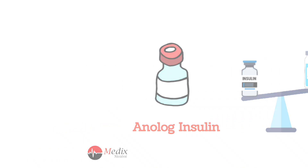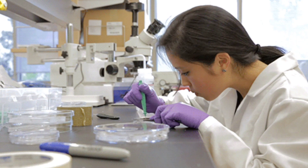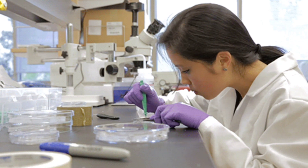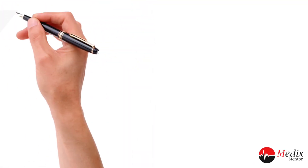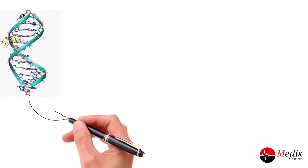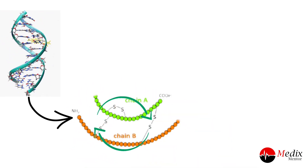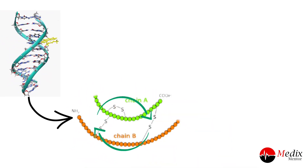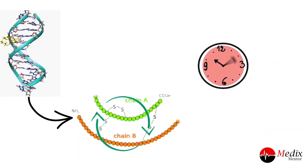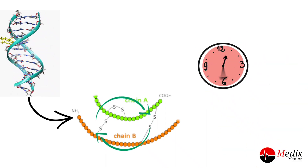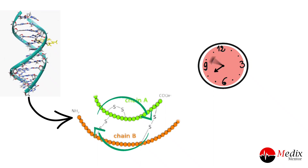Analog insulin is created in a laboratory by growing insulin proteins within E. coli bacteria. This process goes further by changing the order of the amino acids to allow the insulins to be used by the body more rapidly and more uniformly than regular human insulin.